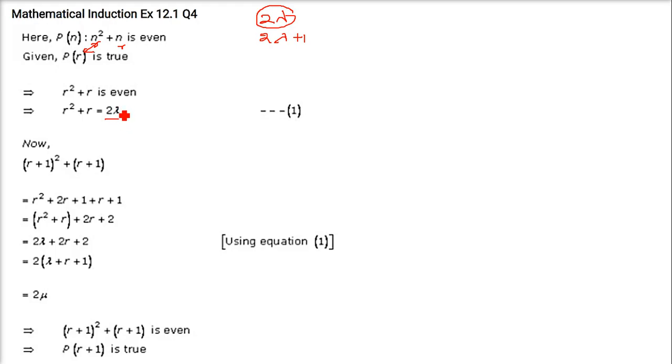Now for r plus 1, put r plus 1 in place of n. You get (r+1)² plus (r+1). Now expand it. This is r² plus 2r plus 1 and this is r plus 1. So you get r² plus r, this one and 2r plus this 2. Now r² plus r can be written as 2λ. So put 2λ here. So you get 2λ plus 2r plus 2. Now take 2 common, you get λ plus r plus 1.